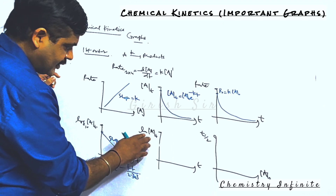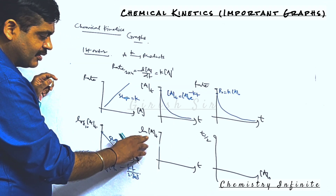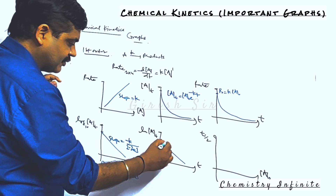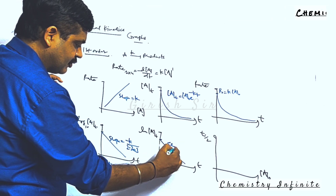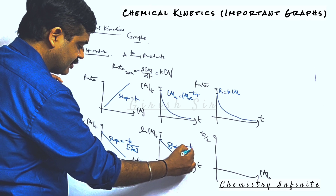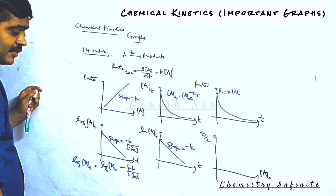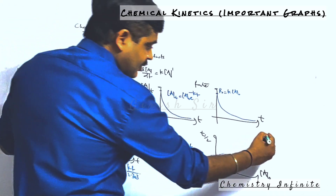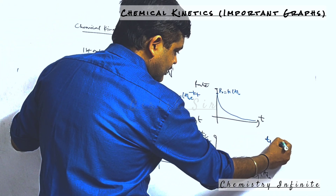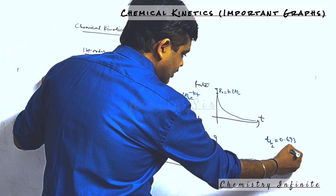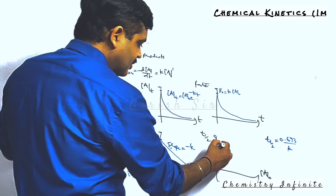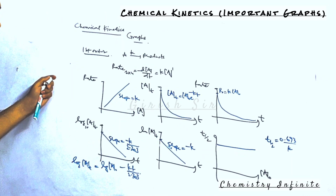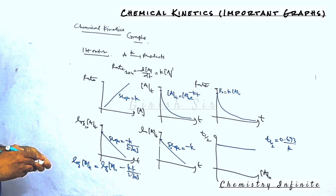The next graph is ln[A] versus time when the base is e. Here again, you have a linear graph whose slope is equal to minus k. Next is the half-life: the half-life of a first-order reaction is 0.693 divided by k and is not dependent on initial concentration, so it is constant. These are the important graphs for a first-order reaction.